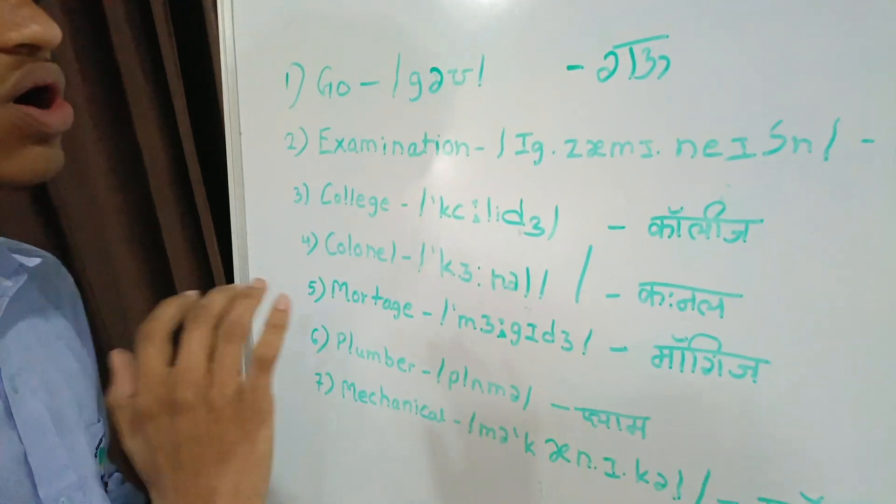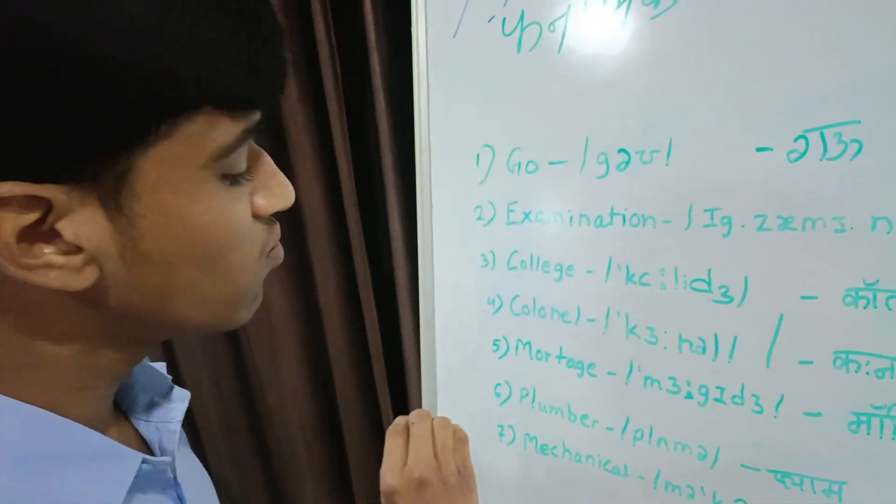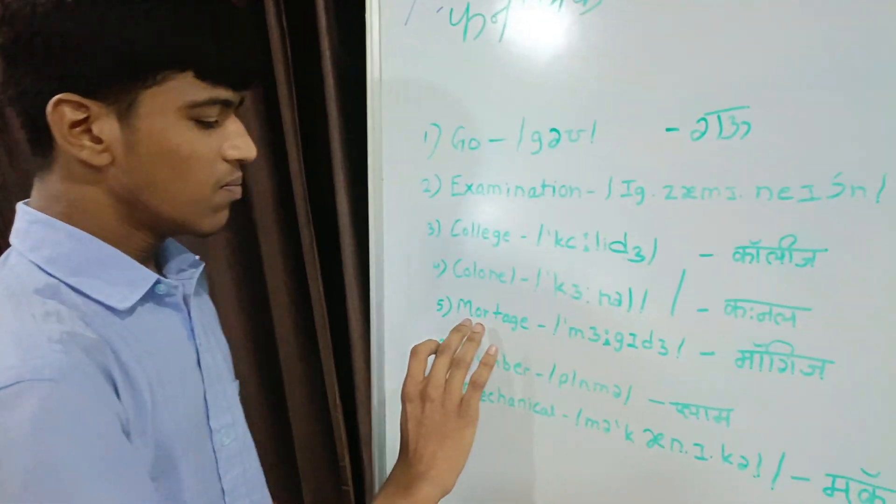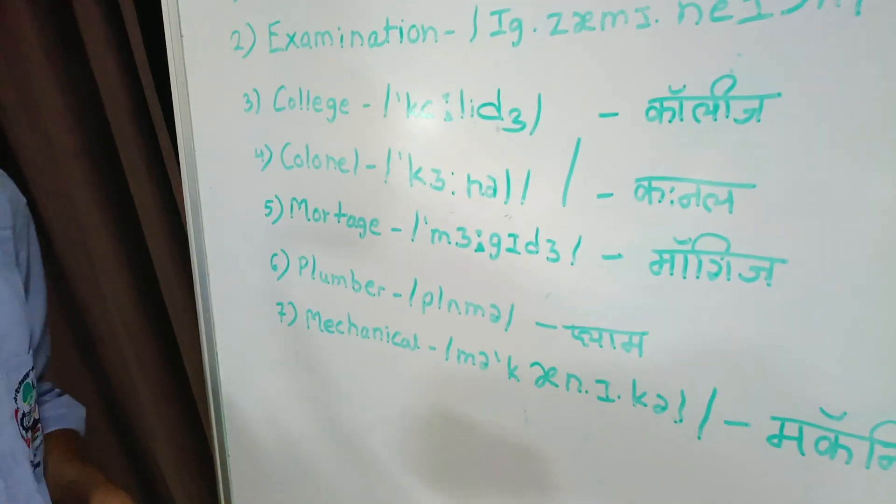Fifth is 'mortgage.' Mortgage means 'gahan,' 'taran,' 'asamantur.' The actual pronunciation is 'mortgage.'